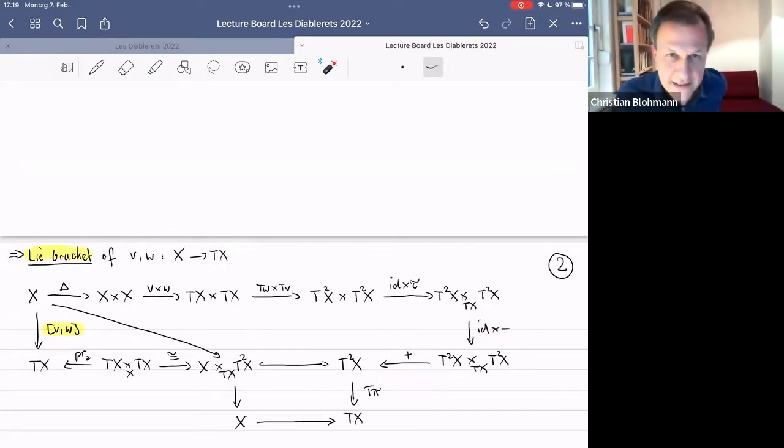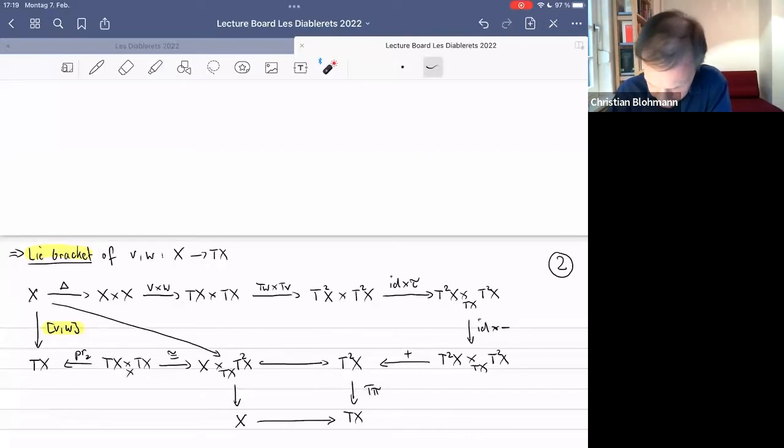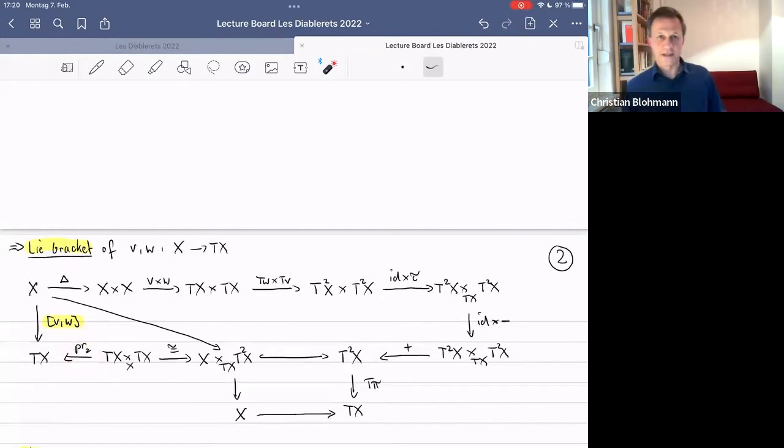Then you apply the tangent maps of W and V, so the other order here. And you get something in T squared of X cross T squared of X. This doesn't live in the fiber bundle yet. You can't add this yet. For this, you need to apply this symmetric structure on one of the elements. Only then do you get something that descends or that factors through the fiber bundle here, T squared X over TX, on which you can then add things, subtract together some kind of commutator of your structures. We apply the minus transformation to one of them. Then we can finally add here. We have the addition, that's one of the structures we're given. So now we end up in T squared of X. That's not a vector field yet.